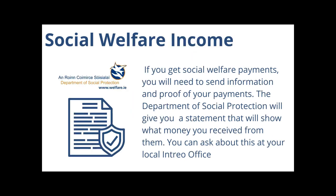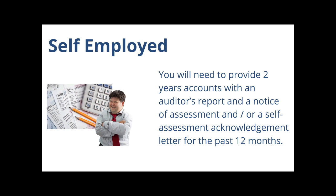If you get social welfare payments, you will need to send information and proof of your payments. The Department of Social Protection will give you a statement showing what money you received from them. You can ask about this at your local Intreo office. If you are self-employed, you will need to provide two years of accounts with an auditor's report, and a notice of assessment and/or a self-assessment acknowledgement letter for the past 12 months.